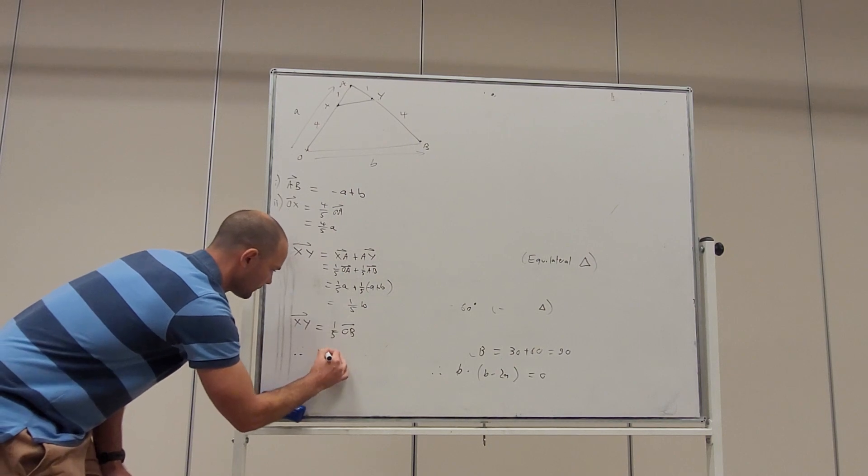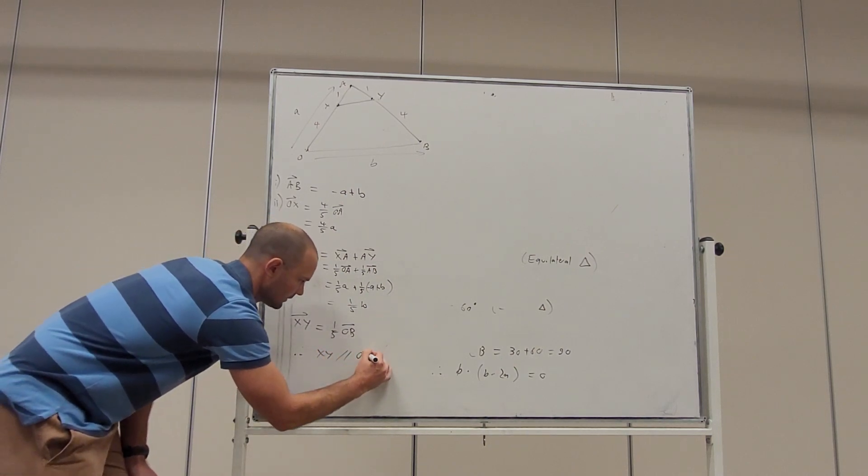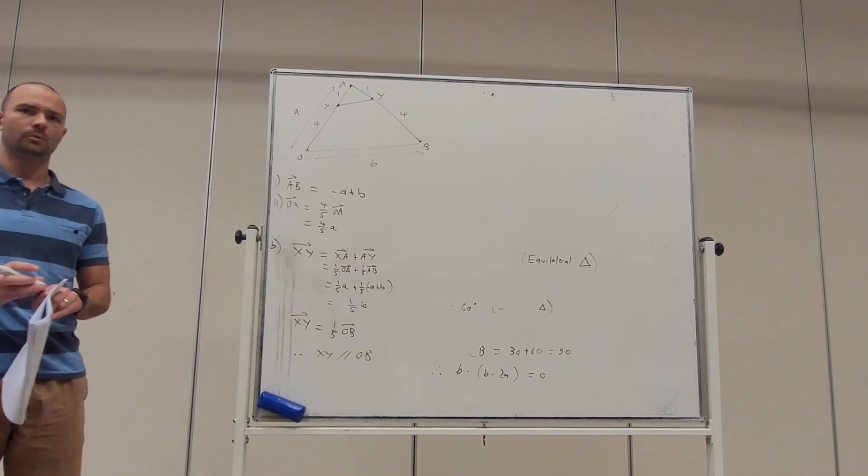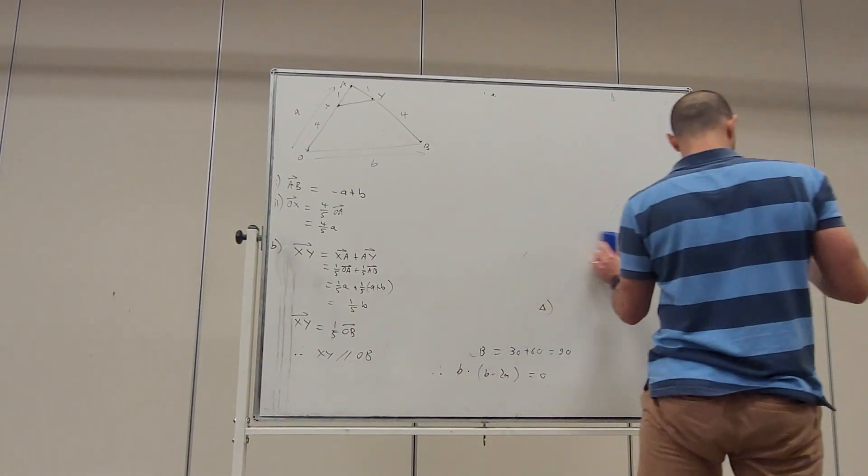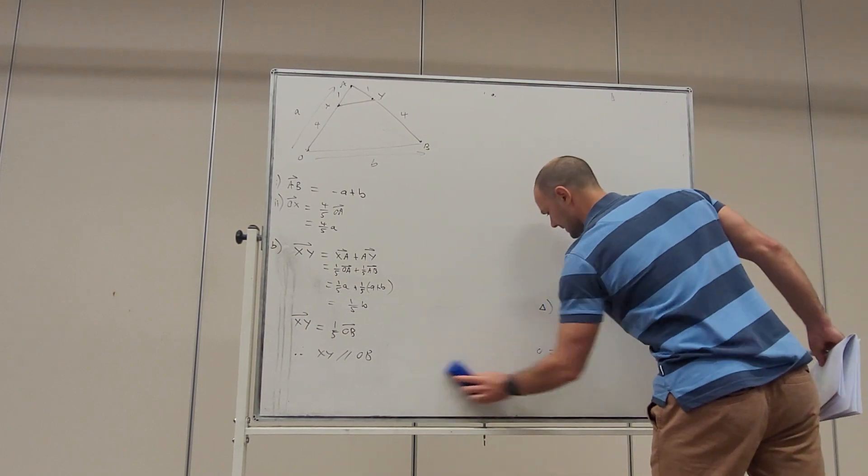So, we've got XY is equal to one fifth of OB. Therefore, XY is parallel to OB. All right. QED. Part B and then we're on to part C.